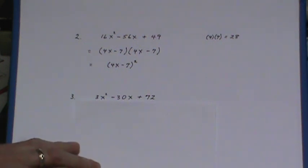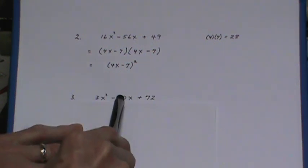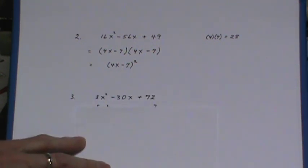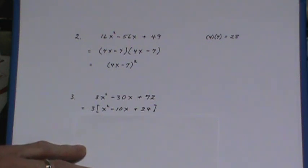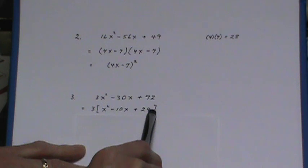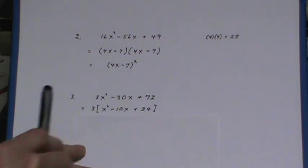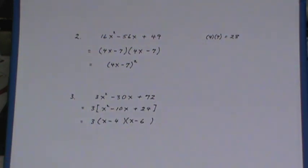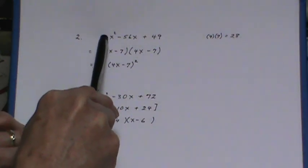Again this one looks like it's going to be decomposition again, but always look for a common factor. All three of these are divisible by 3. Once you take that 3 out this is a fairly easy question to factor. Factors of 24 that add up to 10 are 6 and 4, and that can be done fairly easily. So make sure you look for a common factor first and also be very aware of the perfect squares.